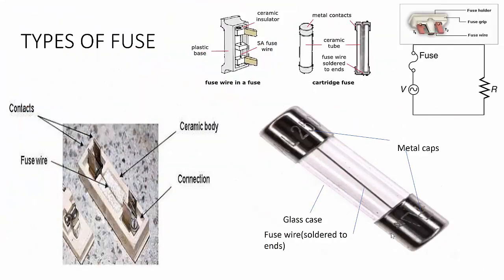There are a variety of fuses available in the market which you will learn in detail in later grades. Fuses can be divided into two types: first is plug fuse, and second is cartridge fuse. Nowadays costly appliances such as refrigerator, air conditioner, geyser, and television are provided with cartridge type fuses of proper current ratings such as 1 ampere, 2 ampere, 5 ampere, 10 ampere, and 13 ampere.